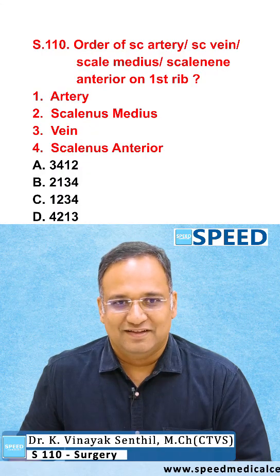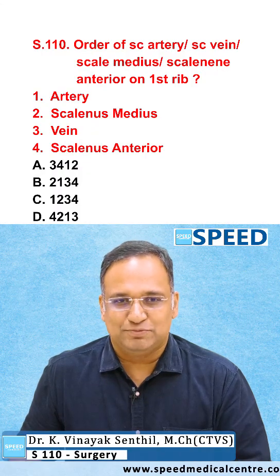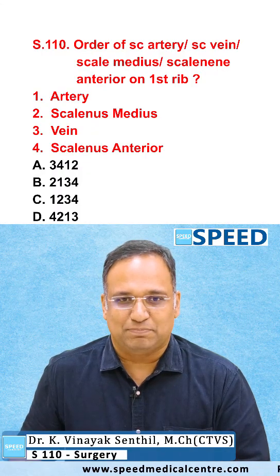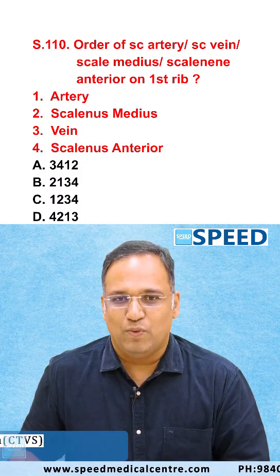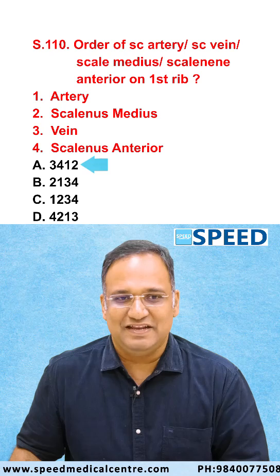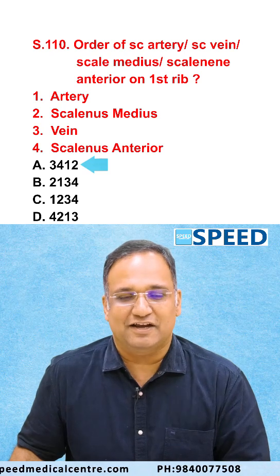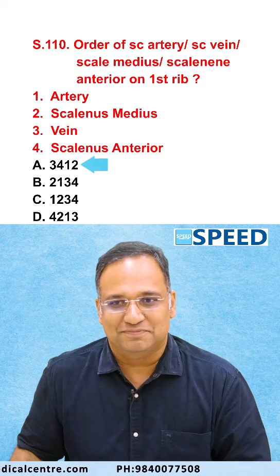Question for the day: What is the order of arrangement of the subclavian artery, vein, scalenus medius, and scalenus anterior in relation to the first rib?